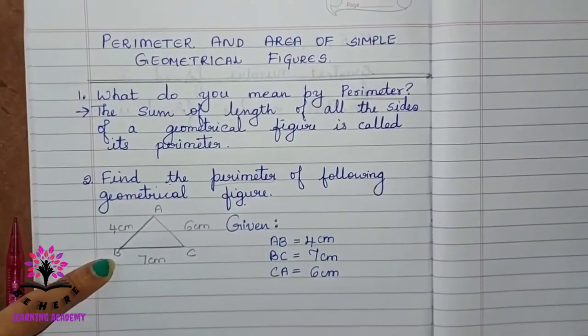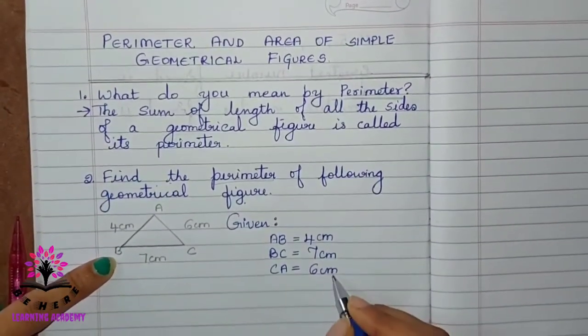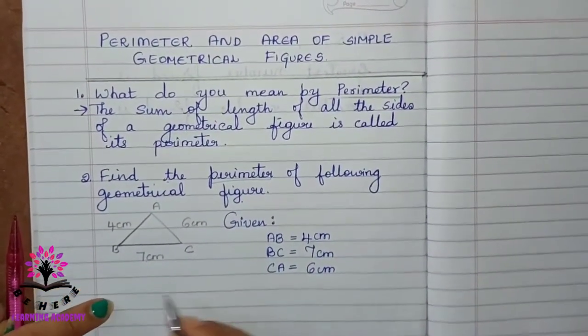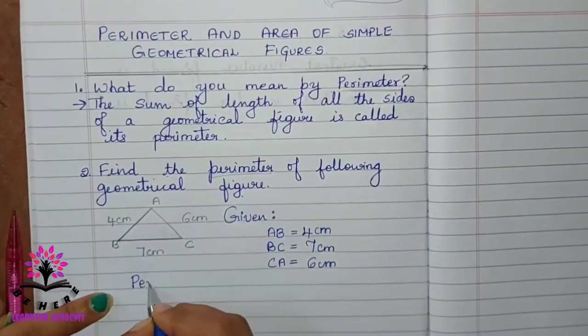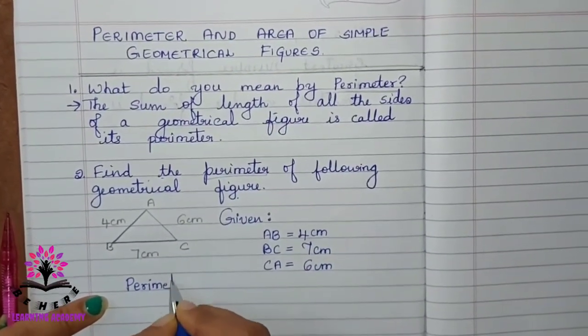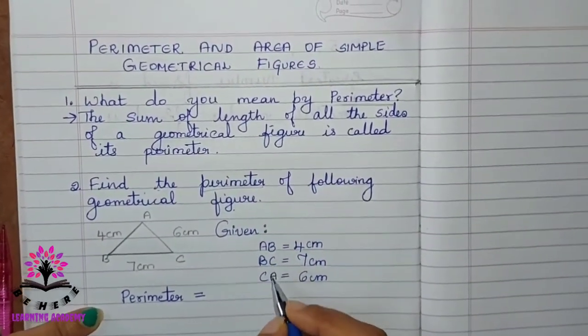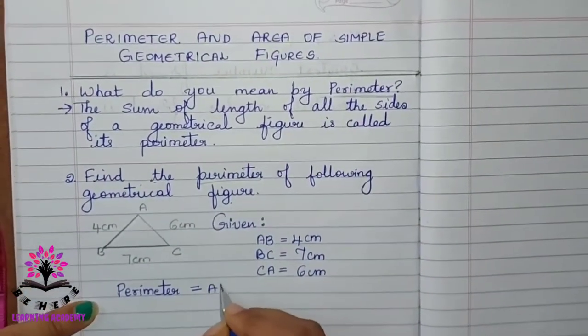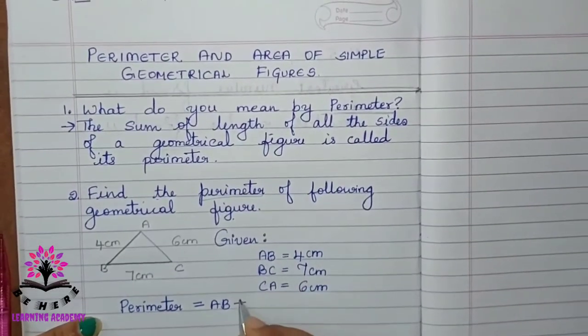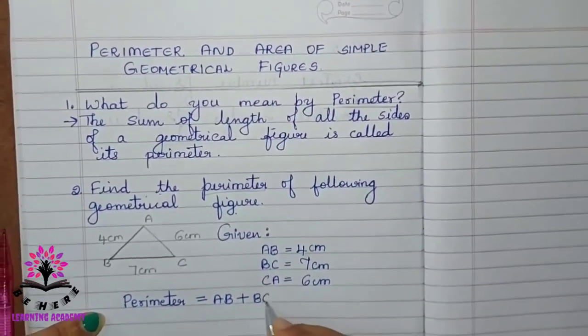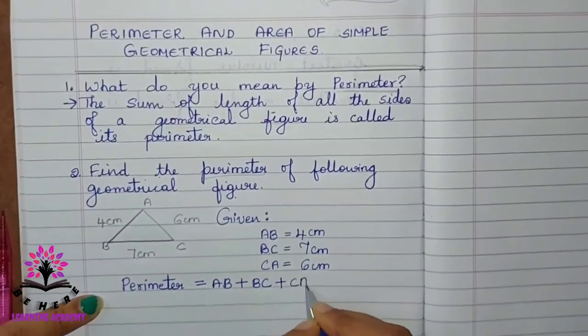Now, you have to find the sum of these to get the perimeter of this triangle. So, you have to write the formula. Perimeter is equal to sum of the sides. That is, AB plus BC plus CA.